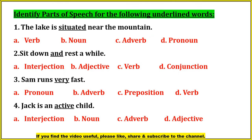As you can see a question with four options. I will be just discussing the answers here; for the detailed explanation you can comment down in my comment box. Identify parts of speech for the following underlined words. The lake is situated near the mountain — so 'situated' will be verb. Sit down and rest a while — so 'and' will be conjunction.